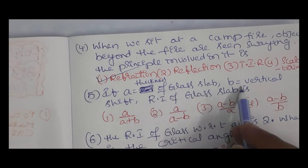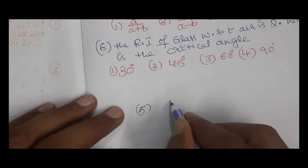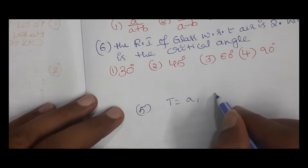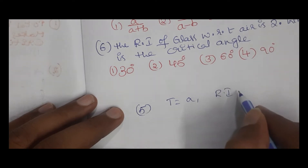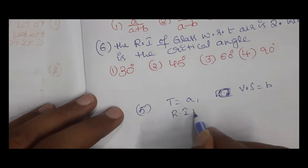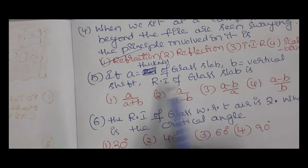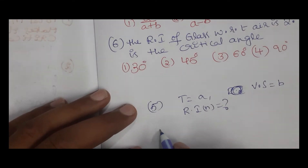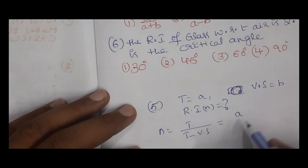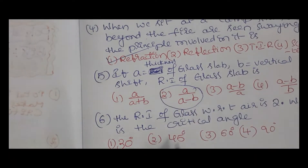Question 5: if 'a' is the thickness of the glass slab and 'b' is the vertical shift, then what is the refractive index of the glass? We know refractive index n = thickness / (thickness − vertical shift) = a / (a − b). So the option is a / (a − b).